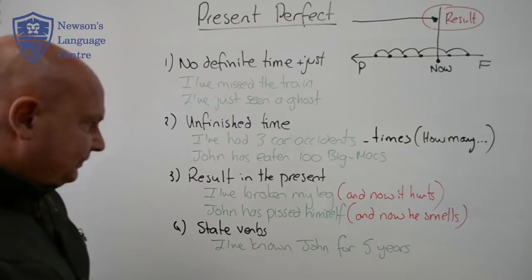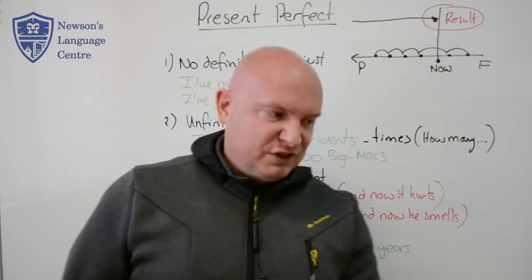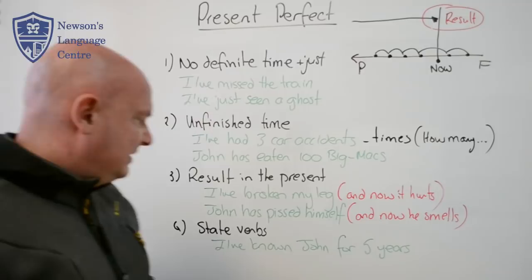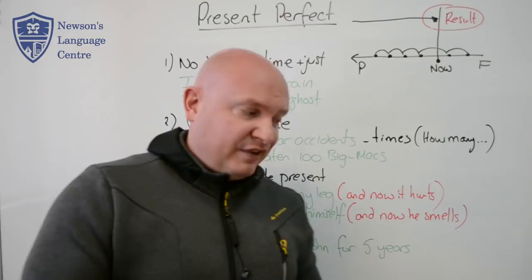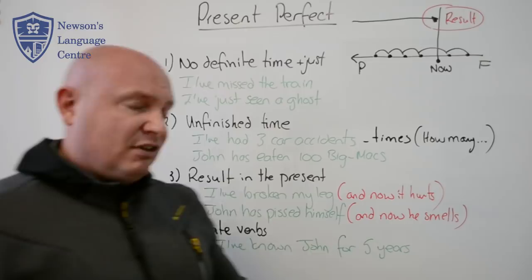Then we go to the last one: state verbs. State verbs are verbs that can't be in a continuous form — with some exceptions, which I'll explain later. With 'for' and 'since,' we often think we must use the present perfect continuous, but the problem is that verbs like 'know' can't be in a continuous form. So we need to use the present perfect simple. I can't say 'I have been knowing John for five years' — that's wrong. Therefore we say 'I've known John for five years.' There are a lot of state verbs that work like this.